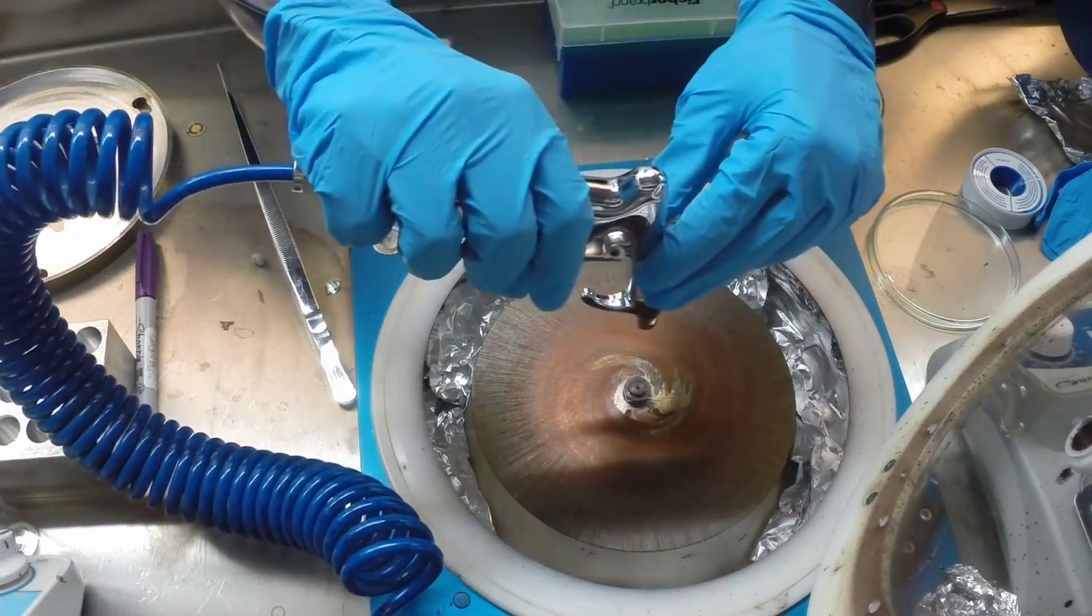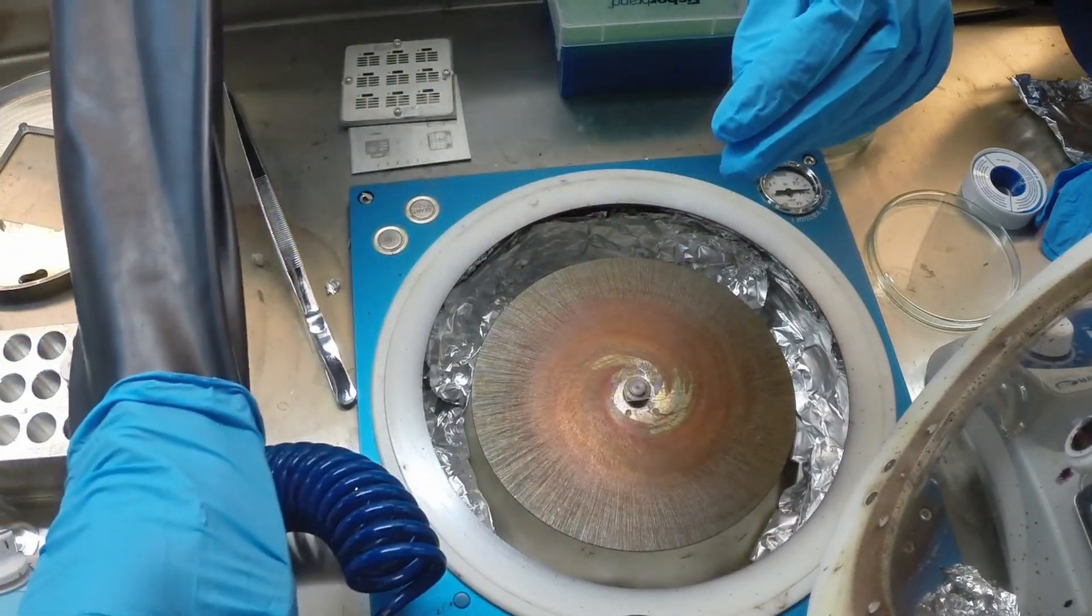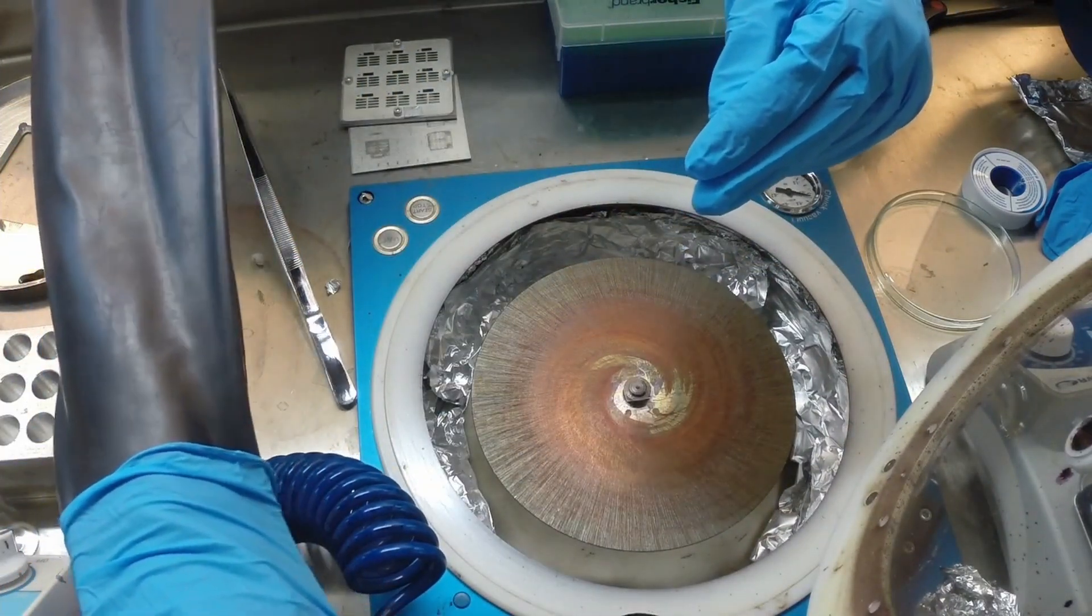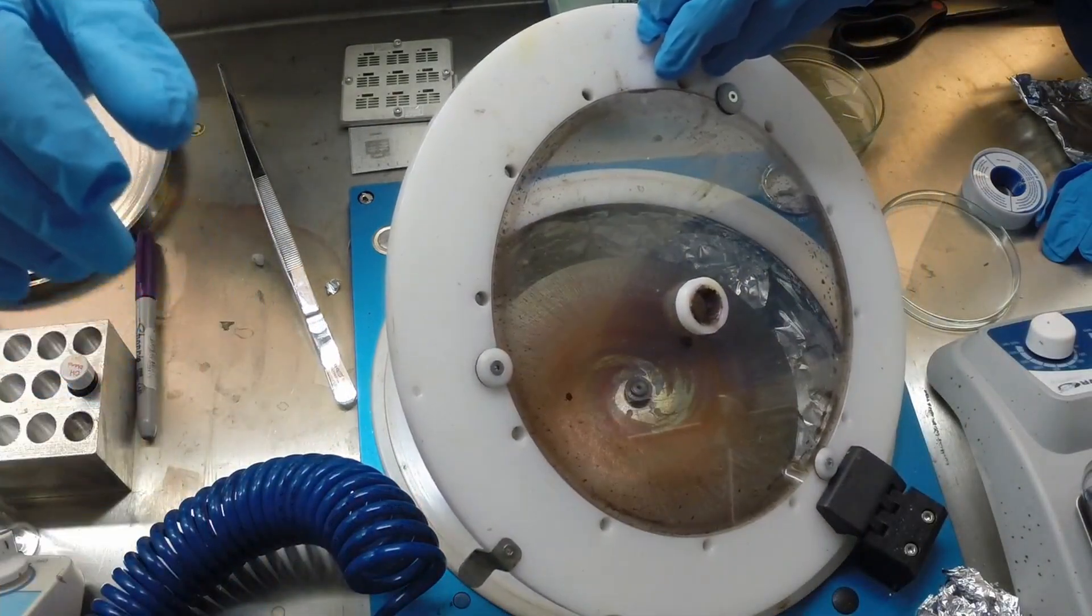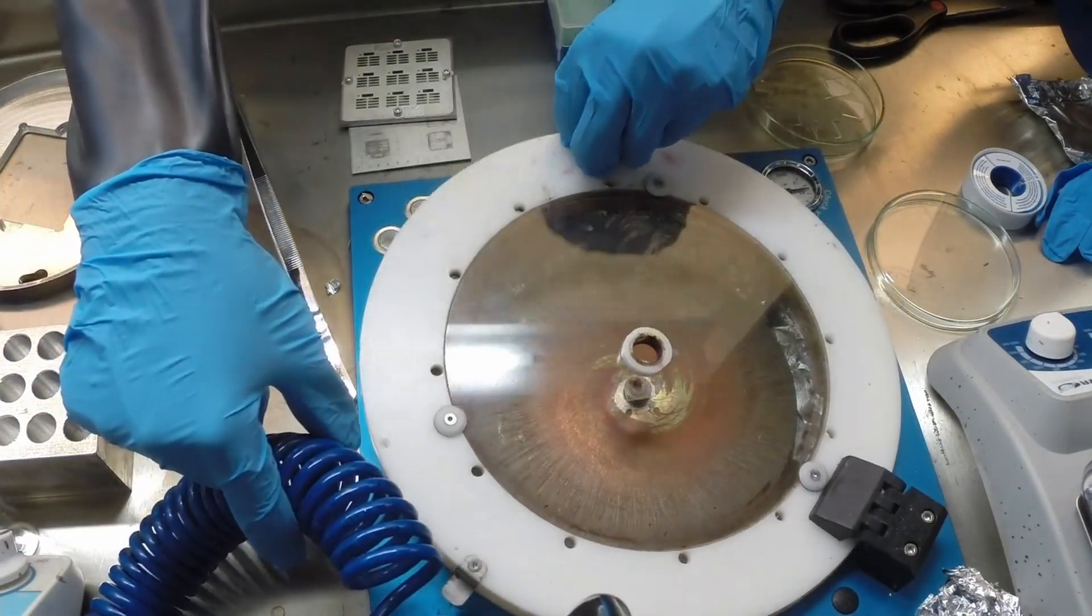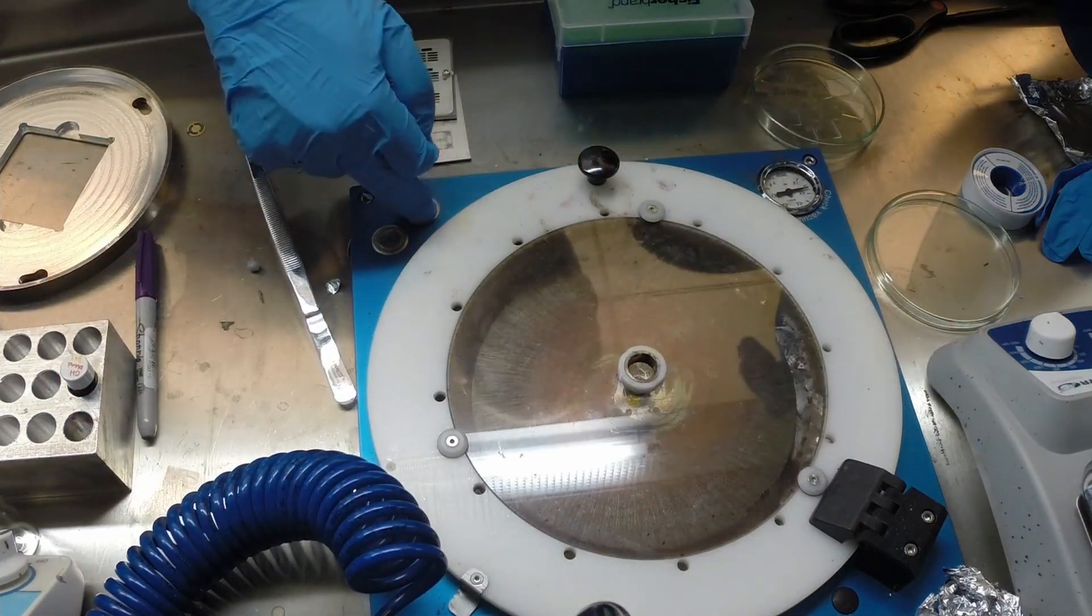Then we'll blow off any dust from the substrate with the nitrogen gun, close the lid, and perform a dry run by pressing the round start/stop button. The purpose of a dry run is to confirm that all spin coating parameters are correct.